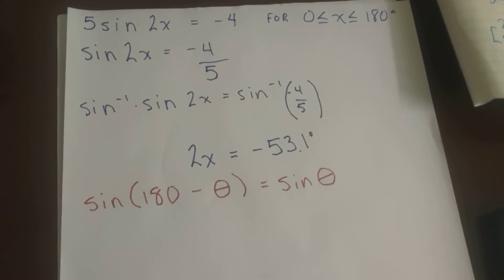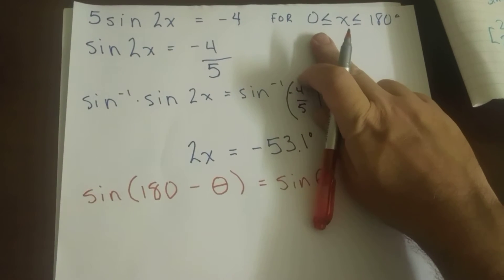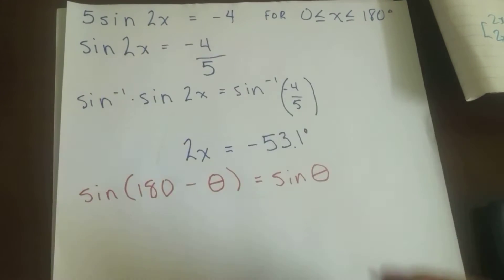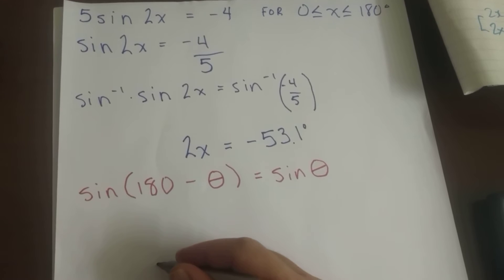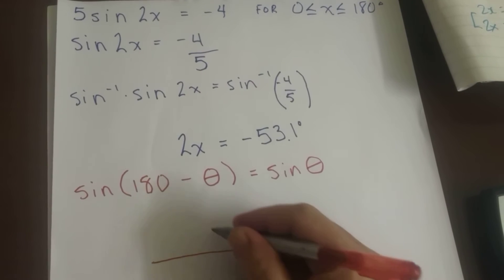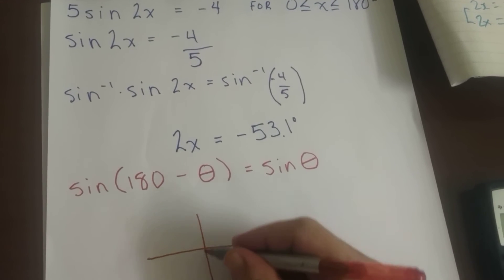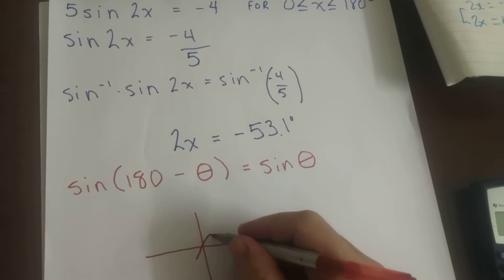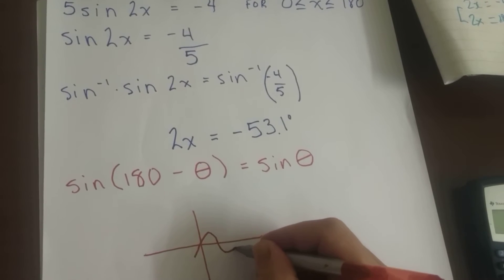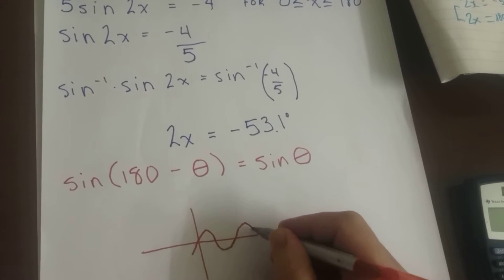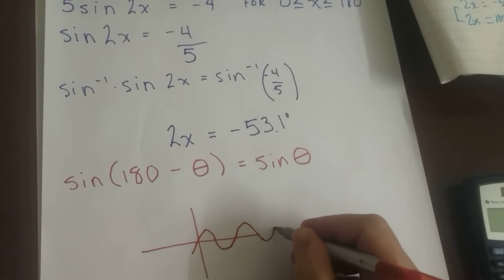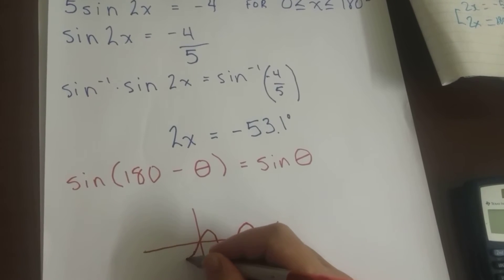What we're trying to do is determine what values are between 0 and 180 degrees. Remember, the sine function is going to oscillate, it's going to go up and down. And because it's 2x, it's going to go twice as fast because the periodicity is half what it is for sine theta. It's going to go this direction too.